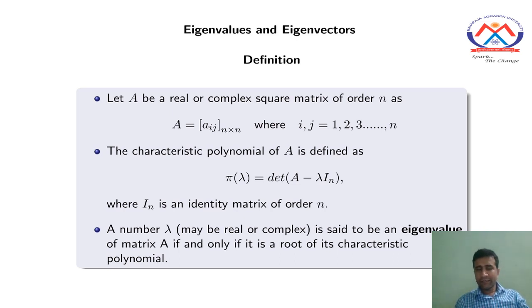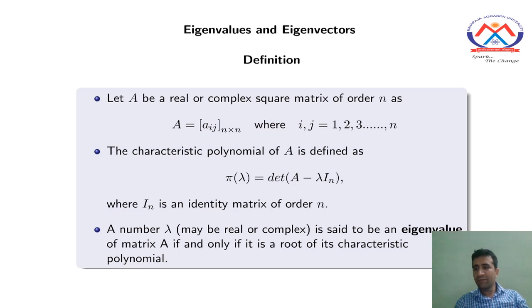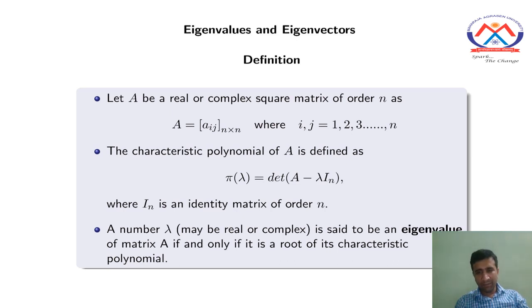The characteristic polynomial of the matrix A is defined as the determinant of (A minus λI), written as π(λ) = det(A − λI). Here I represents the identity matrix of order n. To find the characteristic polynomial, you need to form the matrix A − λI and then calculate its determinant.